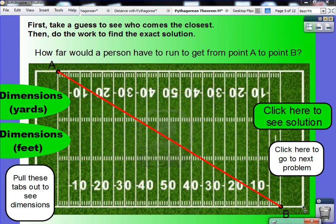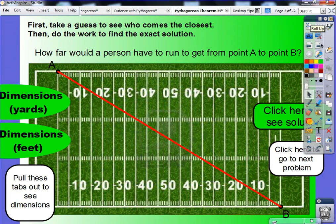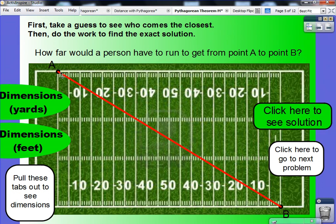This is an application problem involving the Pythagorean Theorem. What I want to know is how far would a person have to run if he was going from point A all the way down here to point B? So, how big is this diagonal here, the red line?